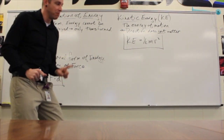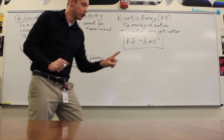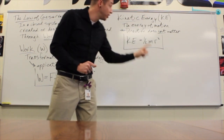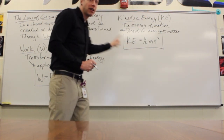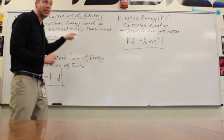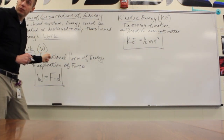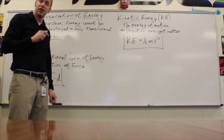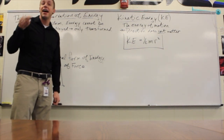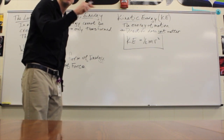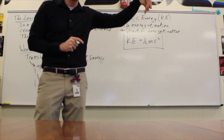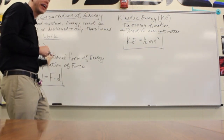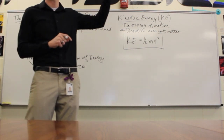If I'm on a motorcycle going 10 meters per second and I drive up a ramp, as I go up the ramp I slow down and stop. My kinetic energy goes away, but energy cannot just go away — so it has to transform into something else. It transforms into potential energy. As we go up the ramp, we stop moving but we gain the potential to fall off. That's gravitational potential energy. Work transforms the motion into the potential to fall.